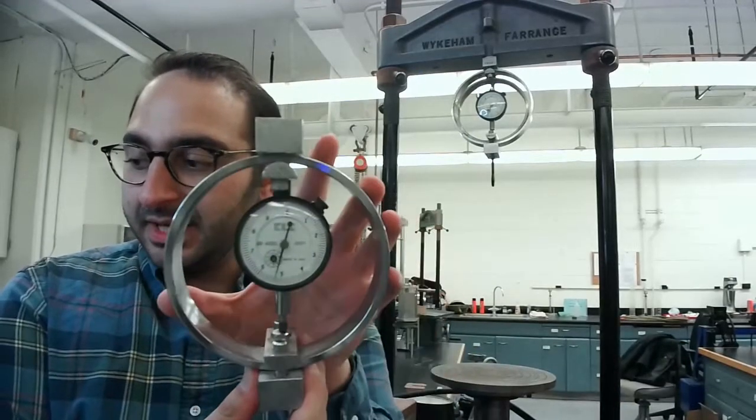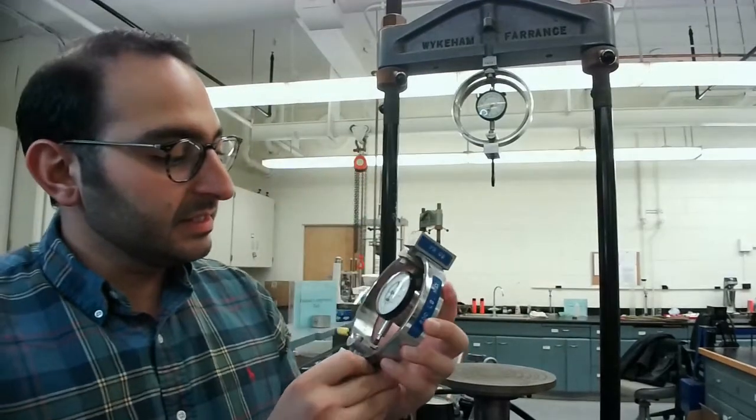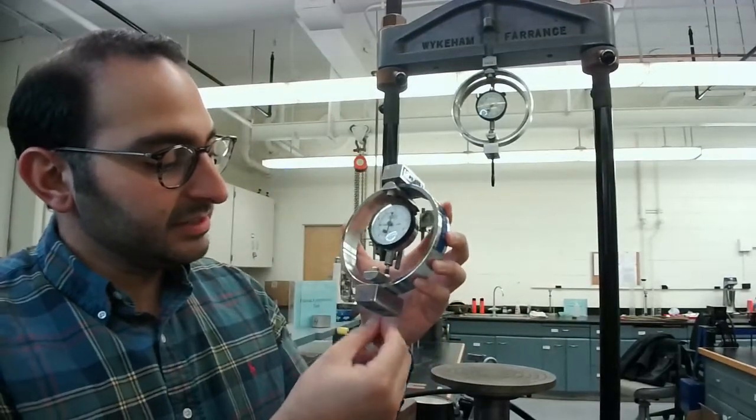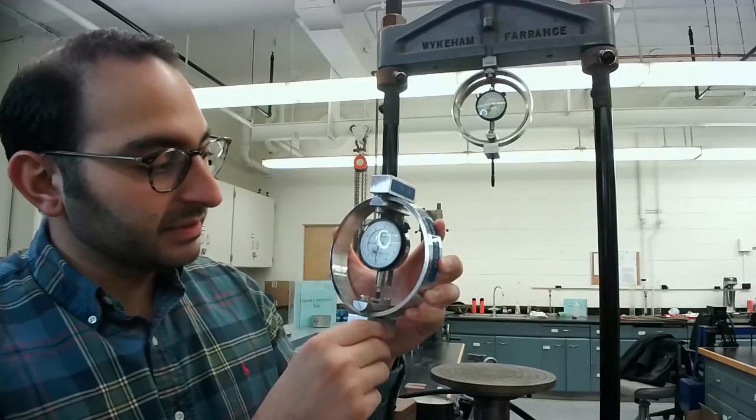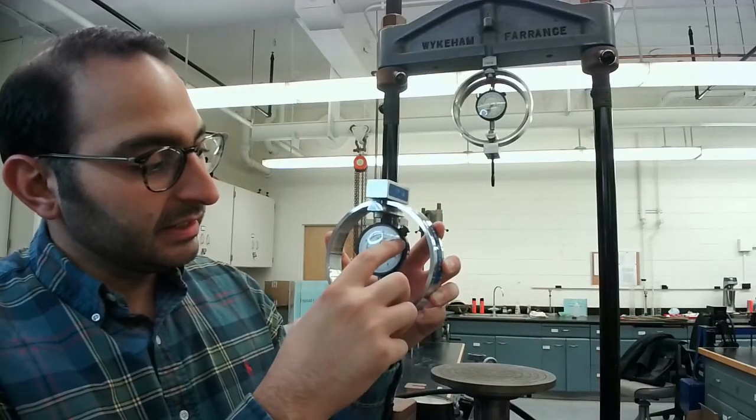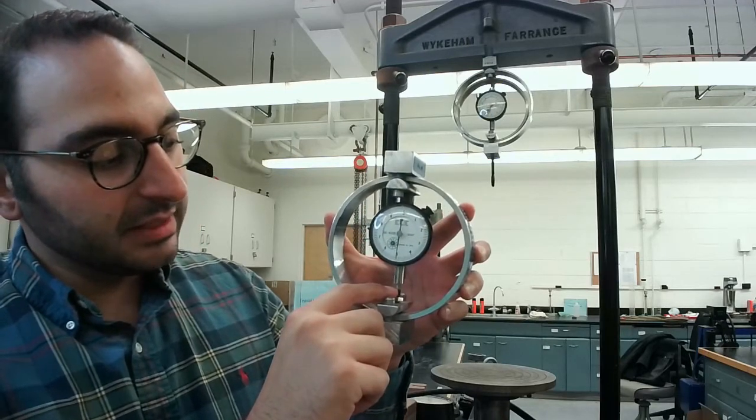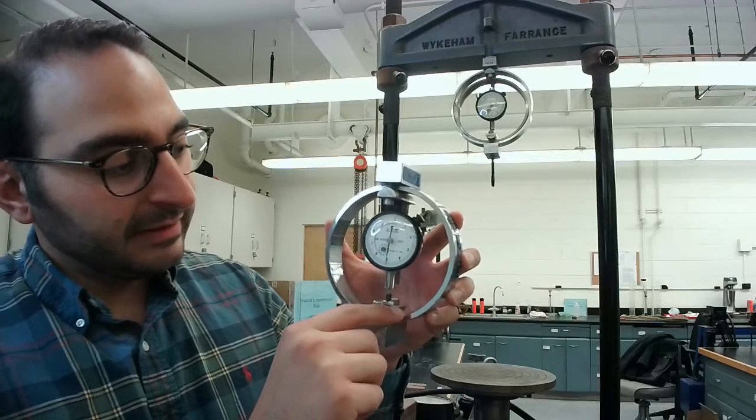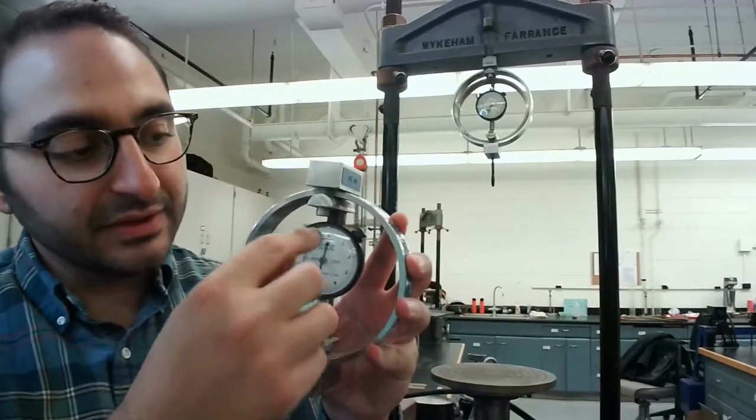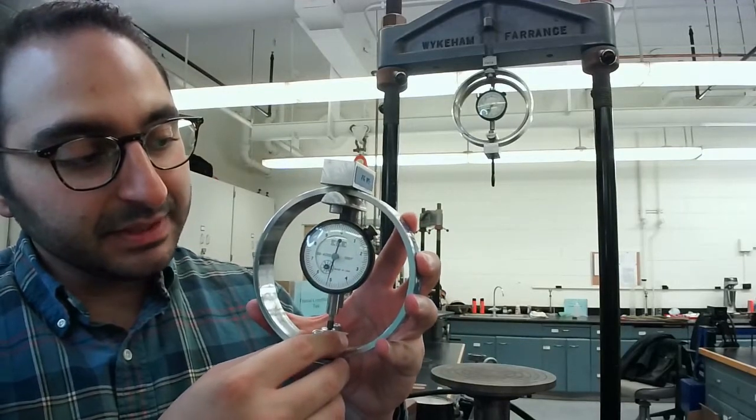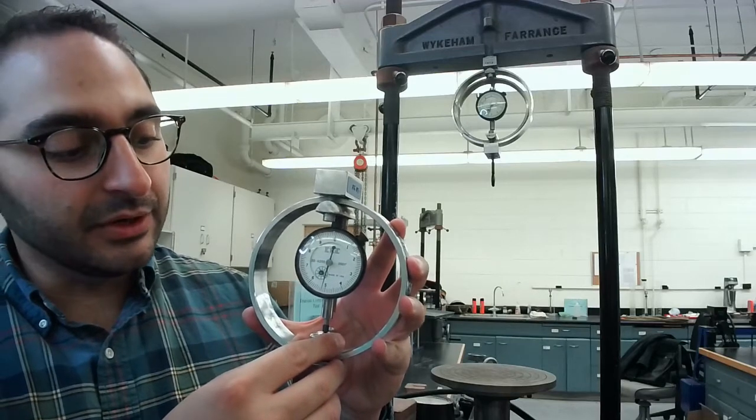It is a ring that has a dial in it. As you hook up weights or loads to the bottom or top of this, it will measure the displacement of this little rod moving up and down. Later, you'll transform the displacement recorded with the dial into a load.